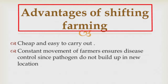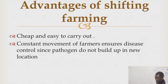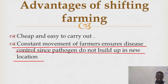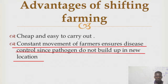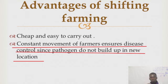Looking at some advantages of shifting cultivation: first, it is cheap and easy to carry out because land clearing is done using fire, making it the cheapest method of land clearing. Also, the constant movement of farmers from one piece of exhausted land to a fresh piece of land helps in controlling some crop diseases, since some crop diseases come as a result of continuous cropping.